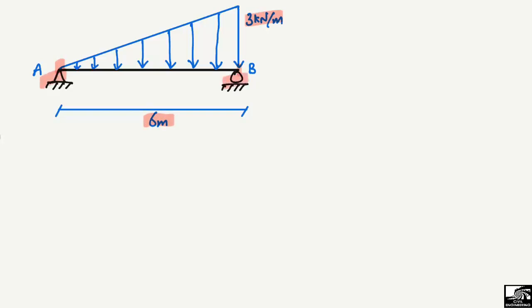Here is the hinge support and here is the roller support. We have to find out the support reactions for this triangular type of loading. The hinge support can resist vertical reaction RA and also horizontal, but the horizontal component will be zero because there is no horizontal load. The roller support can only take vertical load, so it will be RB. RA and RB are unknown and we need to find them.